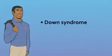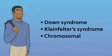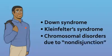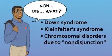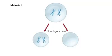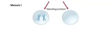Do you know anyone with Down syndrome or Klinefelter syndrome? These are examples of chromosomal disorders which are due to non-disjunction. When non-disjunction occurs during meiosis 1, replicated homologous chromosomes do not separate correctly.